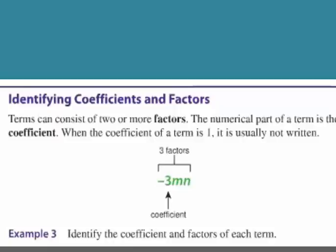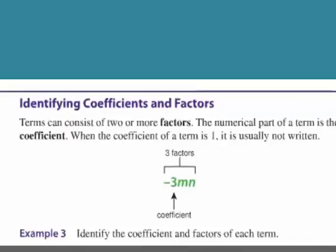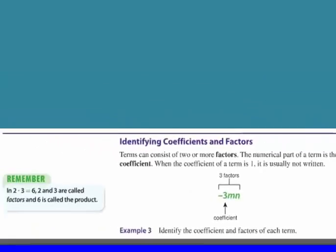Now look at the next part here. We have identifying coefficients and factors. Whenever you have factors, factors are numbers that multiply together. Like look in the corner there. It says remember in 2 times 3 equals 6, 2 and 3 are called factors. And 6 is the product.